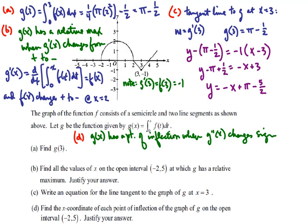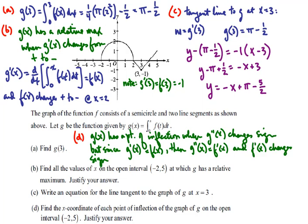But since we've already established that g prime of x is f of x, then g prime prime of x is f prime of x. And f prime of x, which is the slope of the f function, it changes sign at x equals 0, where it changes from a positive slope to a negative slope, and at x equals 3, when it changes from a negative slope to a positive slope.